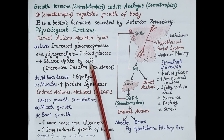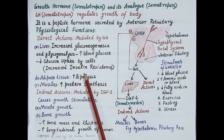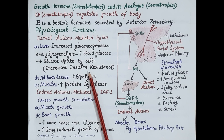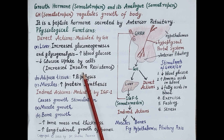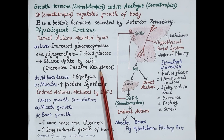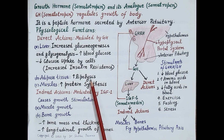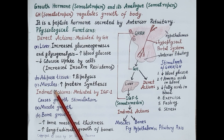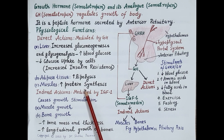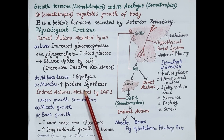Growth hormone increases insulin resistance. Insulin is required for the uptake of glucose from the blood by body cells, and growth hormone prevents this uptake by increasing insulin resistance. In addition, growth hormone promotes breakdown of lipids, increasing lipolysis in adipose tissue, which promotes utilization of fat. Another important action of growth hormone is on skeletal muscles: it increases uptake of amino acids, thereby increasing protein synthesis in skeletal muscles, which is responsible for the growth of muscles and increase in muscular strength.